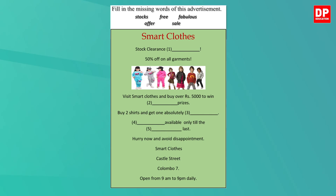Let's see whether you could do it correctly. Let's read the completed advertisement together. Smart Clothes. Stock Clearance Sale. 50% off on all garments. Visit Smart Clothes and buy over 5000 rupees to win fabulous prizes. Buy two shirts and get one absolutely free. Offer available only till the stocks last. Hurry now and avoid disappointment. Smart Clothes, Castle Street, Colombo 7. Open from 9am to 9pm daily. I hope you could get all the answers correct.